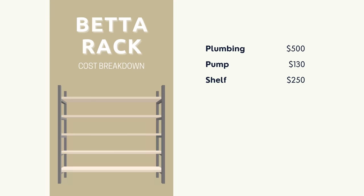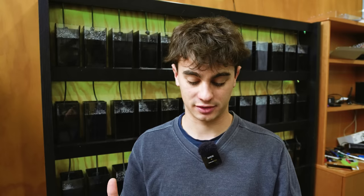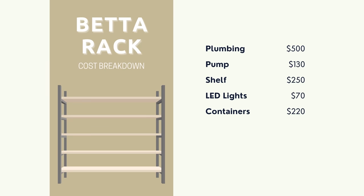I spent $250 on getting the cupboard made. This might be a little bit more, this might be a little bit less. I spent $70 on the LED lights and then I spent $220 on containers. So in total the whole project cost me about $1,170 and now I can keep 52 beautiful bettas in the best conditions possible now.